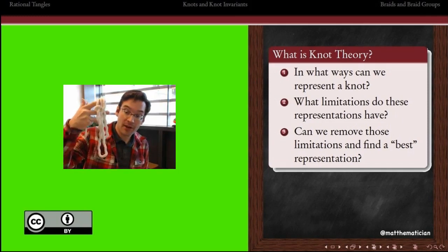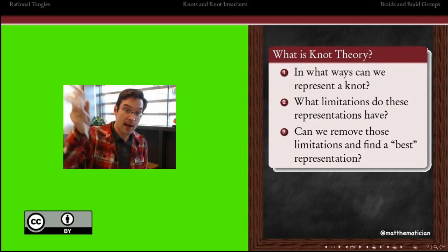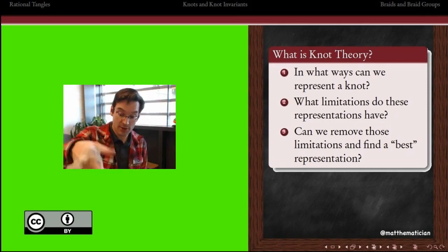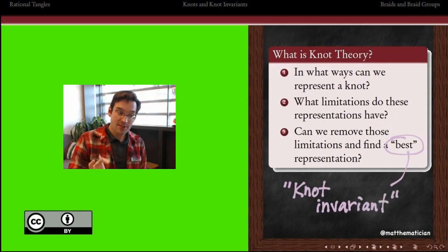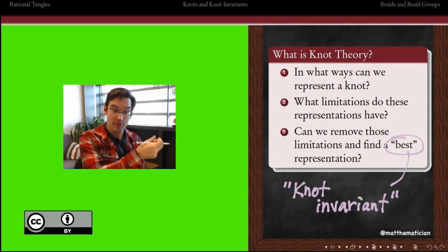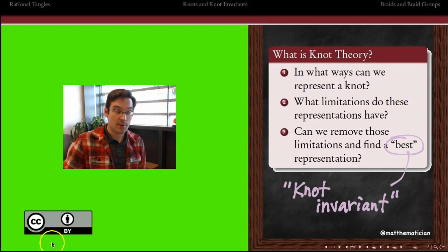Someone handed this to me on the street and I wanted to come up with a way of describing this knot to somebody else who can't see it or touch it. What is the best way that I can do that? If there is such a best representation, it's going to come in the form of what a mathematician would call an invariant, a small piece of information we can tell somebody about a knot. From that piece of information, they can totally reconstruct the knot. That's the idea for today.